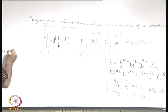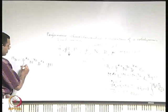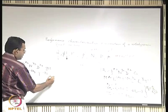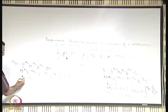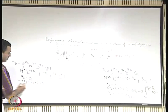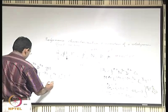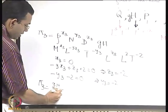Similarly for Pi₃: rho^x3 · n^y3 · d^z3 · gh. Since gh has dimensions L²·t⁻², we get x3=0, -3x3+z3+2=0, -y3-2=0. Solving: y3=-2, z3=-2, x3=0. So Pi₃ = gh / (n²·d²).